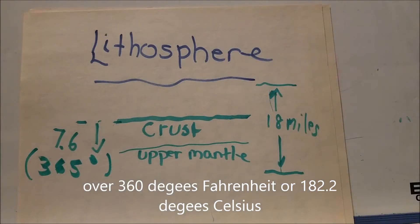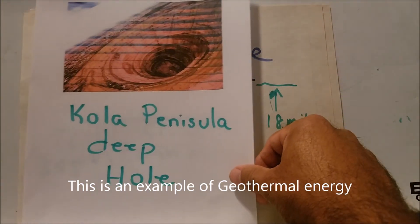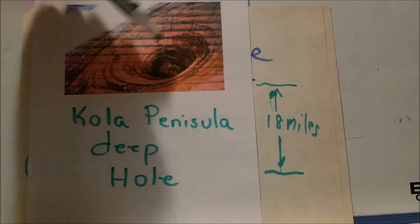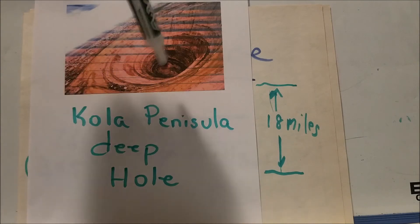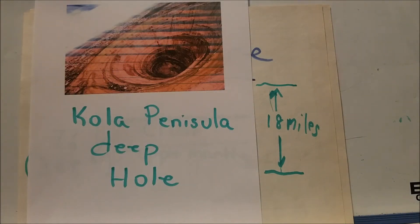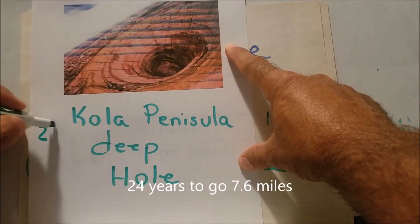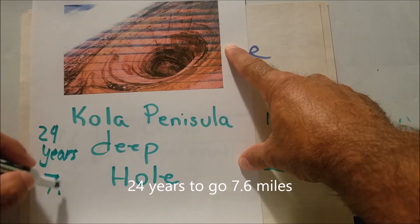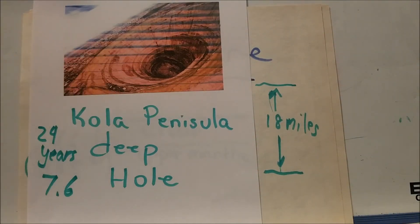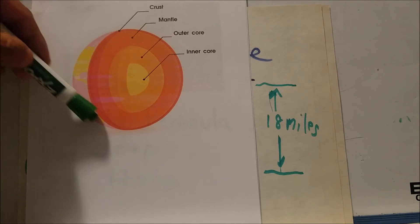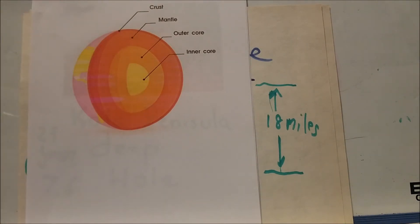As the Russian scientists dug down — this is called the Kola Peninsula Deep Hole — they had to stop because of extreme temperatures. They started around 1970 and it took 24 years to go down 7.6 miles. So we went down 7.6 miles, and we have another ten miles to go before reaching the mantle, and we don't have the technology right now to get there.